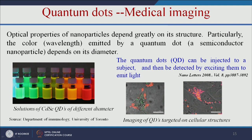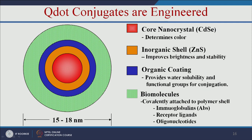The optical properties of nanoparticles depend greatly on structure — particularly, the color emitted by the quantum dot depends on its diameter. Quantum dots can be injected into a subject and detected by exciting them to emit light. However, quantum dots are toxic and not biocompatible. To make them biocompatible and soluble, we engineer them: a core nanocrystal determines the color, an inorganic shell improves brightness and stability, and an organic coating provides water solubility and functional groups for conjugation with antibodies or peptides for cancer diagnosis.